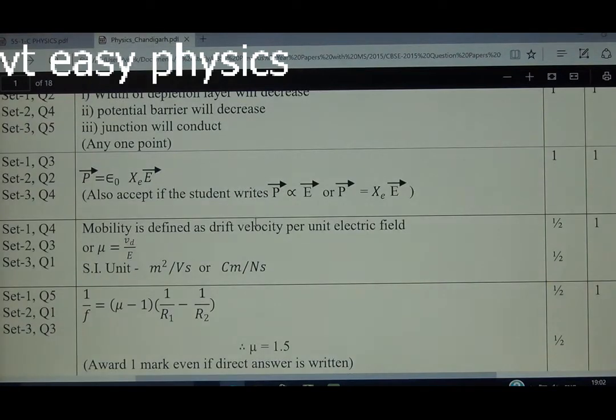Generally, people overlook this. We can link it to magnetism and magnetization. Here is the electric susceptibility χₑ. Similarly, in magnetism, there's magnetic susceptibility χₘ. So polarization is ε₀χₑ times vector E.